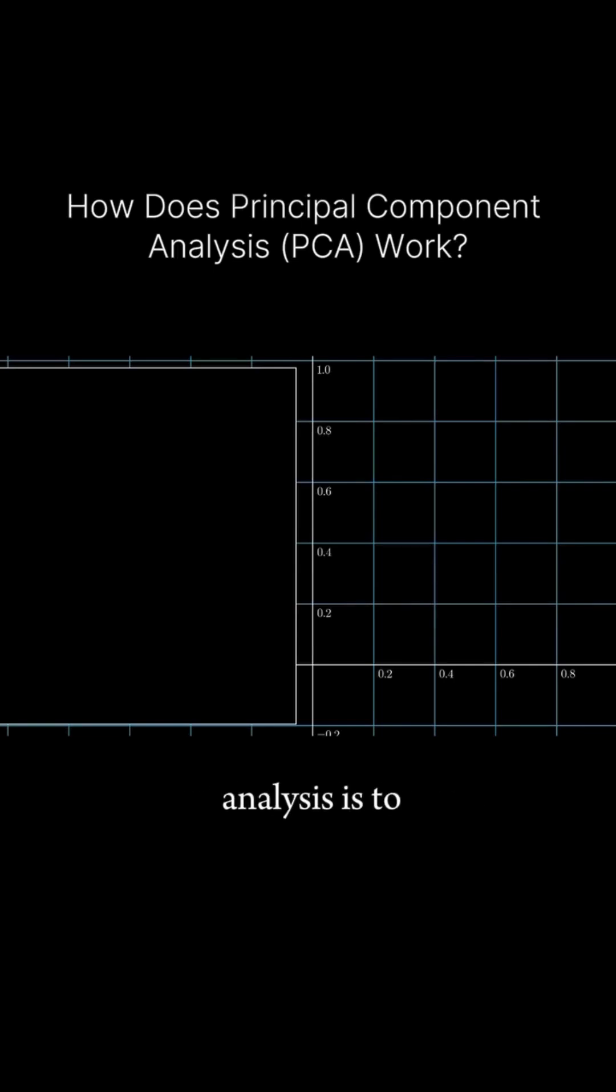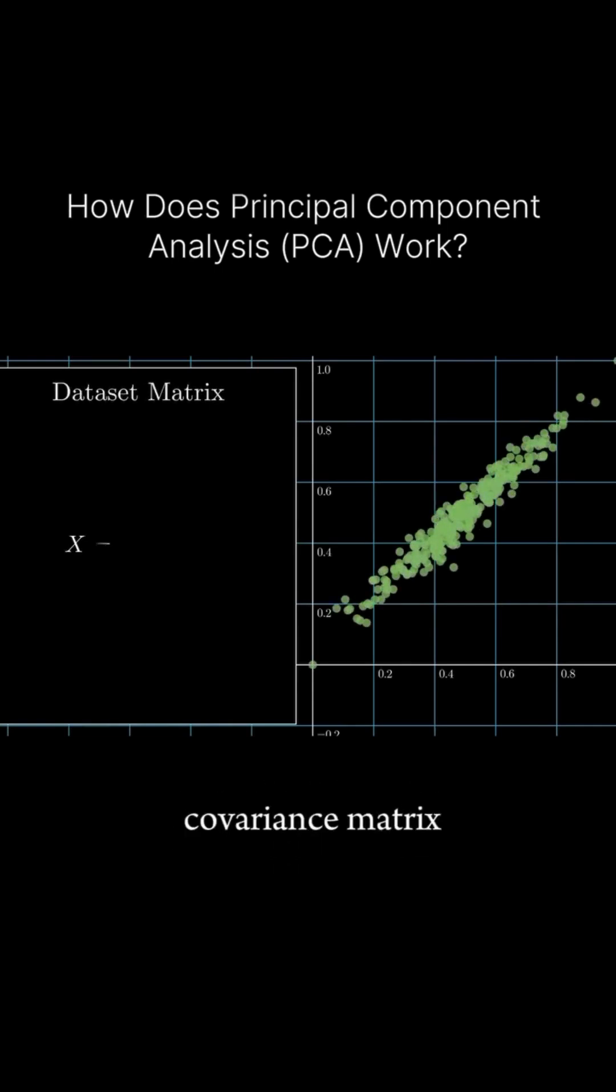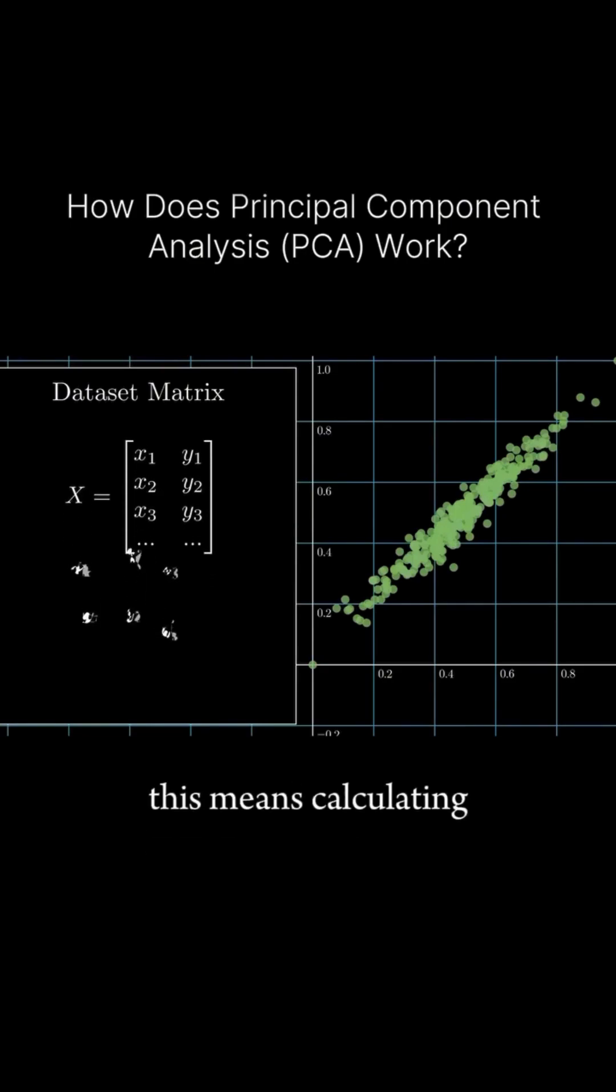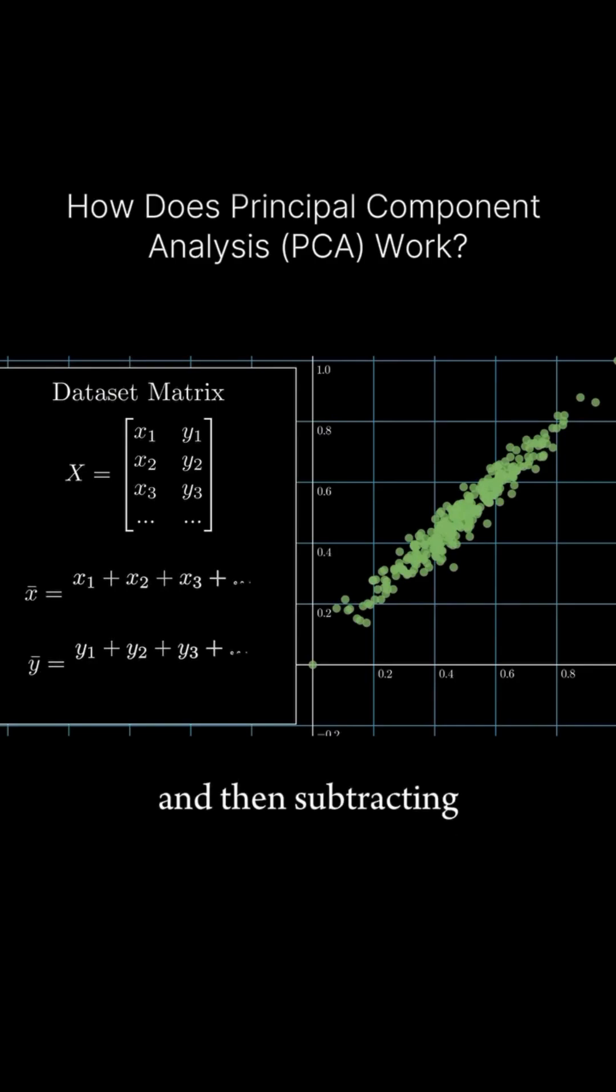The first step in principal component analysis is to calculate the covariance matrix of the dataset. Let's look at a simple example using our previous 2D dataset. To calculate the covariance matrix we first need to center our data. This means calculating the mean of each variable and then subtracting that mean from each data point.